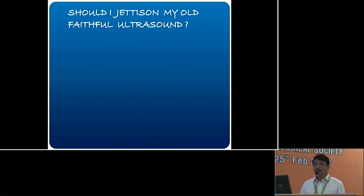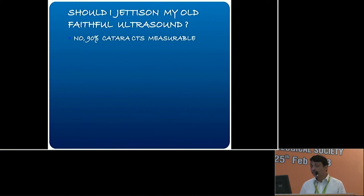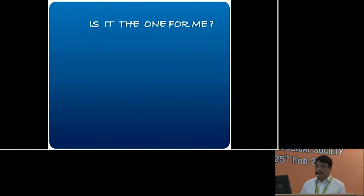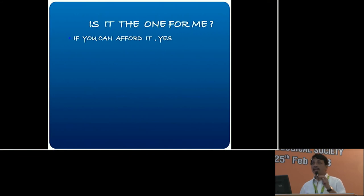Should I jettison my old faithful ultrasound machine then? Not at all. About 90% of cataracts can be measured with optical biometry, but about 10% still require ultrasound — for example, dense PSCs. So don't throw it away. If you can afford optical biometry, definitely acquire it — it is the gold standard for any serious cataract surgeon.